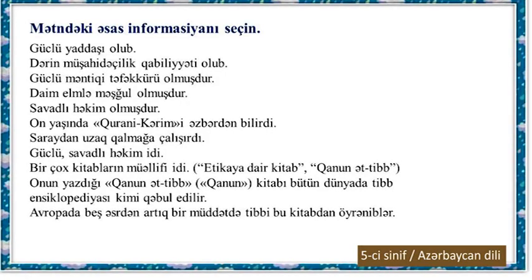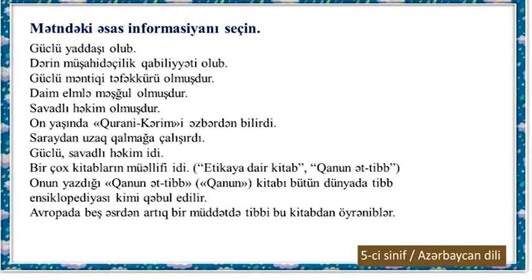Read the text. What information will you find about Ibn Sina in the text? The key information is as follows: after reading the text, we learn that Ibn Sina had a very strong memory, high observational ability, and strong logical thinking. We learn that Ibn Sina stood out from childhood for his intellect and dedicated his youth to science. He was a very learned doctor. By the age of 10, he already knew the Quran by heart. He always tried to stay away from the royal court.